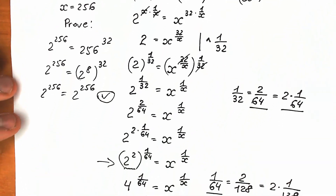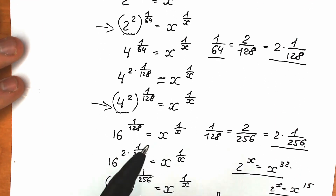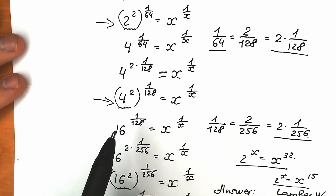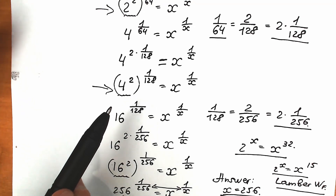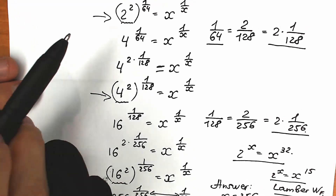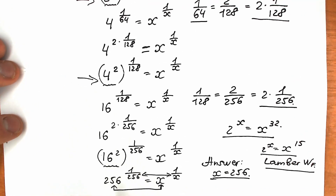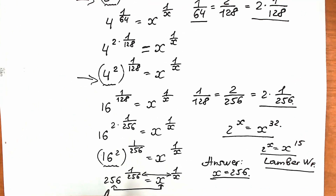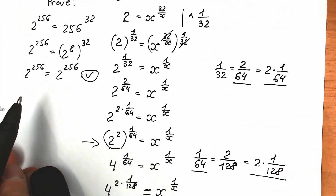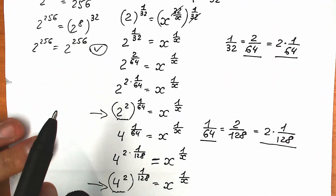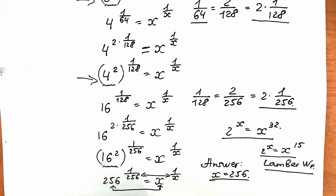Each of these steps is based on power rules and tricky moves, because this approach is hard to find in a textbook — there's no standard algorithm. These are clever moves that get us closer and closer to the final answer. Our final answer is x equals 256. You can pause the video and write your solution down in the comment section.